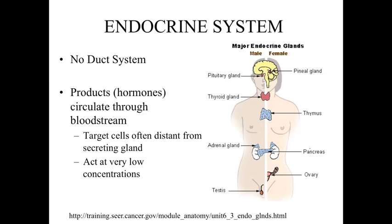What's different about the endocrine system from the secretory cells we've talked about previously is that those secretory cells — like the digestive system organs, the pancreas, the salivary gland, even things like the liver — have maintained a duct system. They release their secretory product into a duct system, and the materials are transported through that duct system and then dumped out onto an epithelial surface or into an organ.